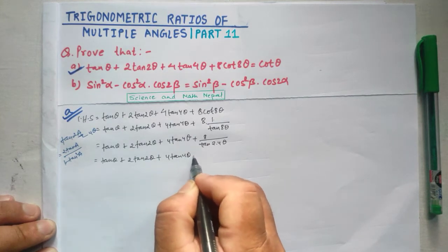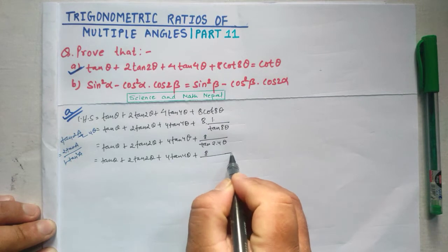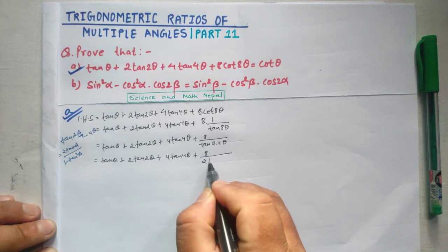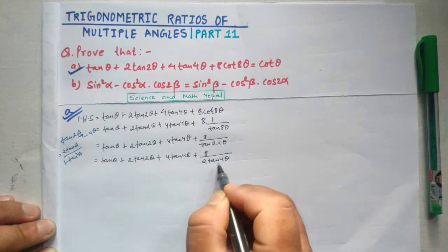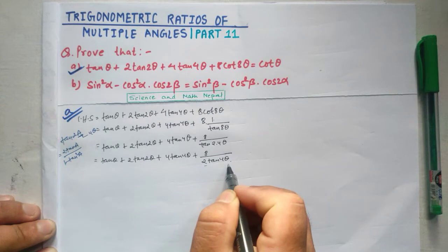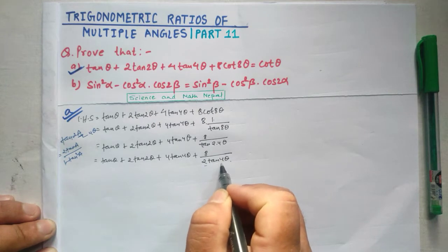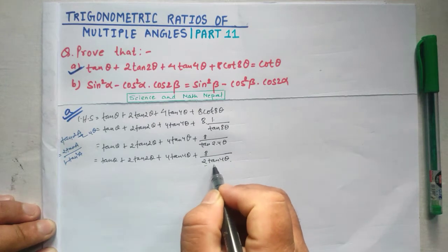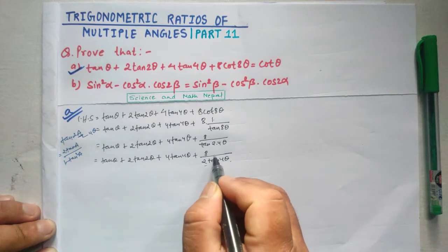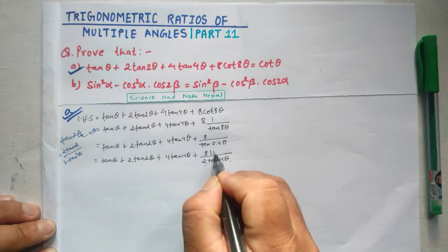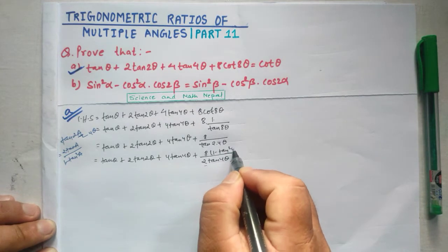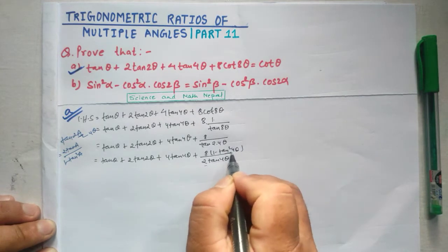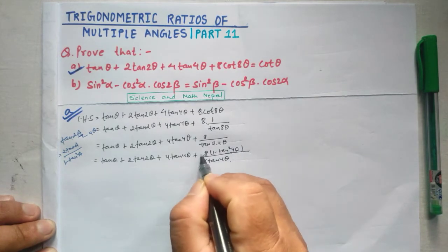We start by working on the term 8 divided by tan 8θ. Using the double angle formula, tan 8θ equals 2 tan 4θ divided by 1 minus tan² 4θ. So 8 divided by tan 8θ becomes 8 times 1 minus tan² 4θ, divided by 2 tan 4θ.